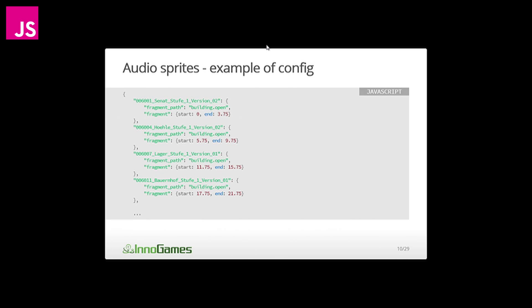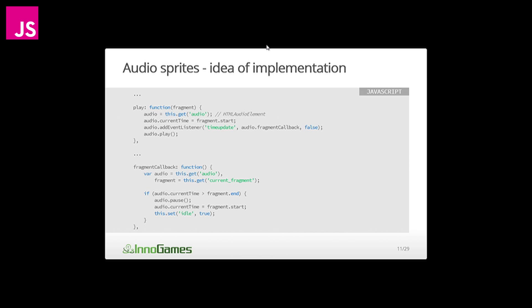Let's look at some JavaScript. This is an example config. We pass when the sound starts and when it ends — this is an actual example from the Grepolis game. The property name is the ID of the sound, followed by the ID of the sound sprite, then start and end times: the first one starts at zero seconds and ends at 3.75 seconds. The gap between different sounds is two seconds, and the next one starts at 5.75.